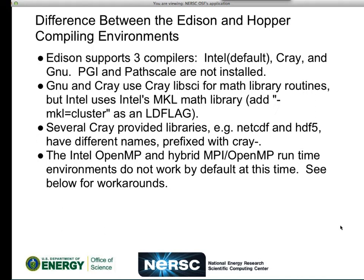Another thing you will notice — though it's actually not Edison-specific — is that Cray has changed the name of several of the libraries they provide, like NetCDF and HDF. They are now prefixed with 'cray-netcdf'. This actually exists on Hopper as well, and it's part of the long-term policy of Cray to replace the original names with the Cray names. It's still supported as legacy on Hopper, but eventually they'll go away and you can only use the cray- ones. Also, the Intel OpenMP and hybrid MPI/OpenMP runtime environments do not work efficiently by default at this time.